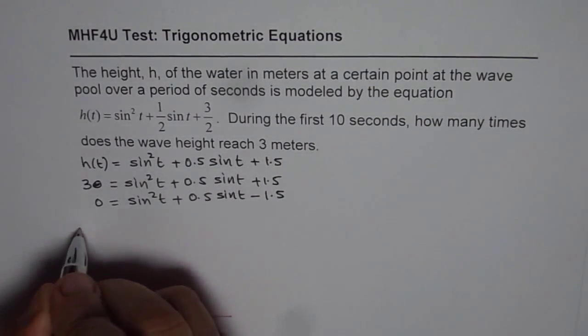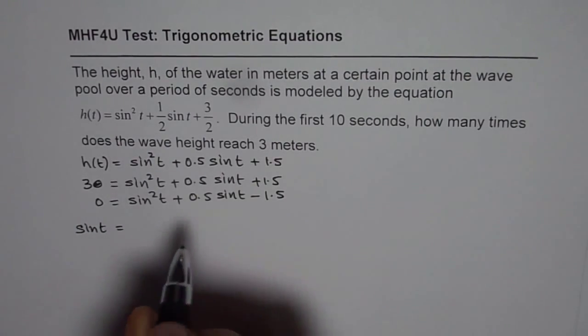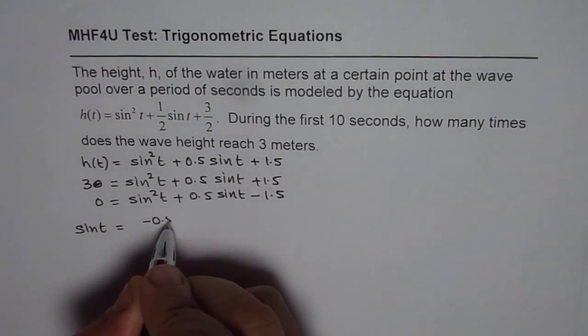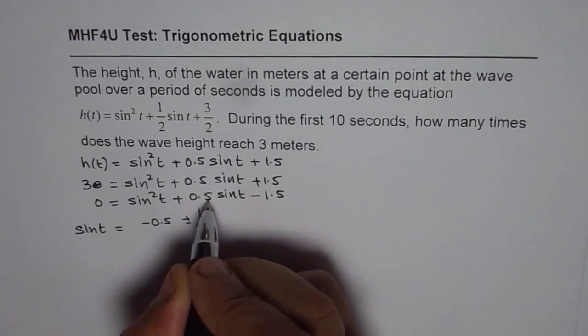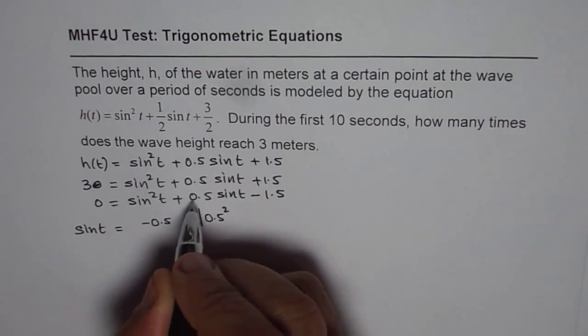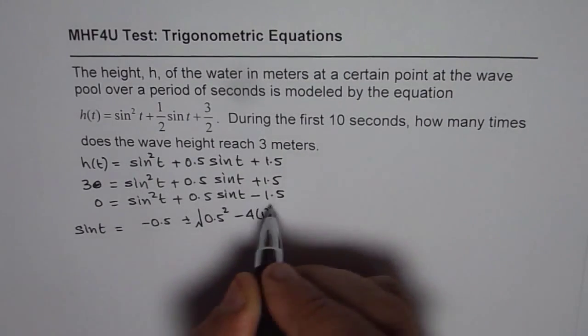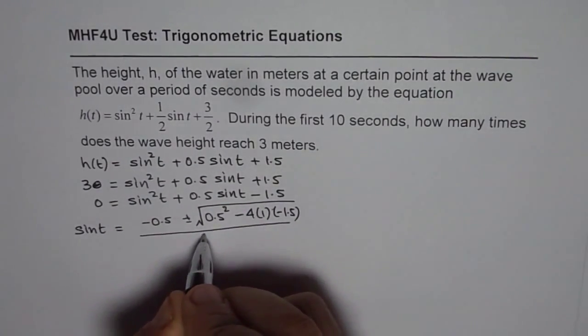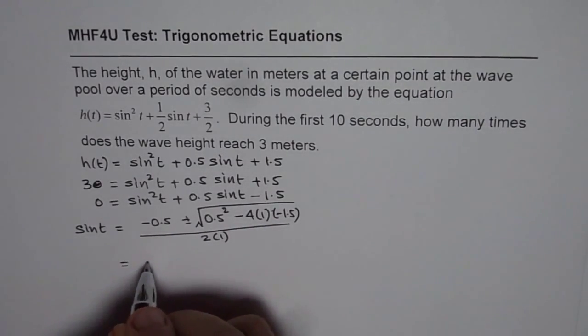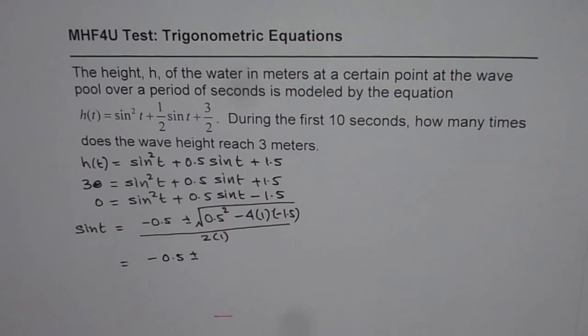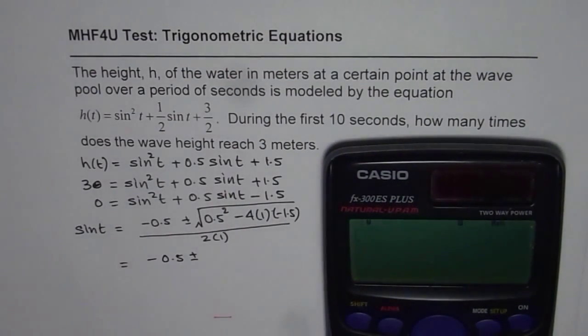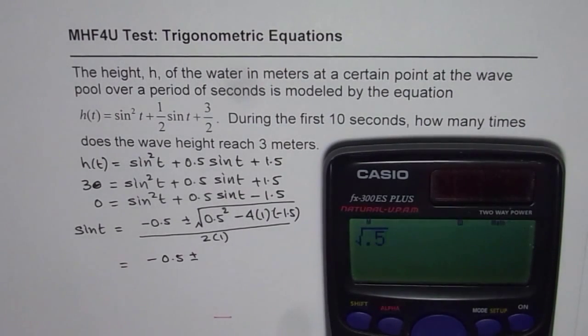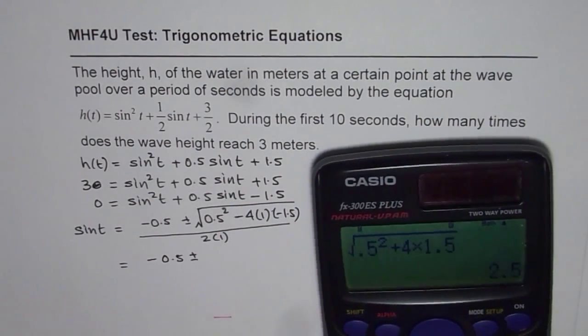We can now find the value of sin t using the quadratic formula which is minus b. So minus of 0.5 plus and minus square of 0.5 minus b square minus 4 times a which is 1 times minus 1.5 which is c divided by 2 times a which is 1. So we have minus 0.5 plus or minus. We can calculate this value within the square root which is 0.5 square minus and minus becomes plus 4 times 1.5 equals to 5 over 2 which is 2.5.